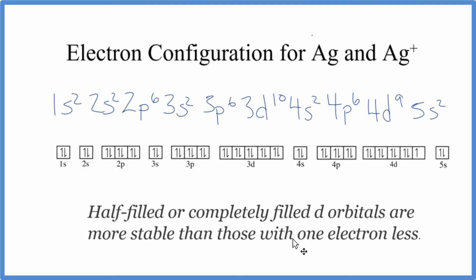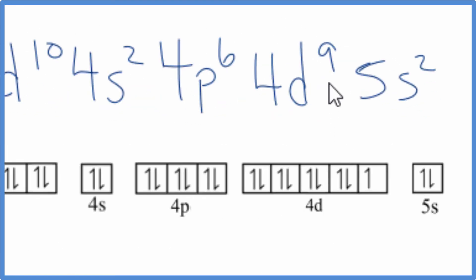What experiments have told us is that half-filled or completely filled d orbitals are more stable. Here, if we had one more electron here, this would be much more stable. So we could take this electron here and move it over from the 5s² to that 4d.